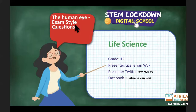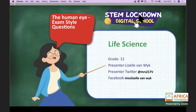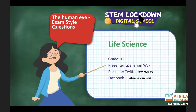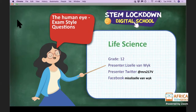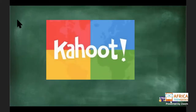Welcome, everyone! We are going to start with a Kahoot today so we don't have to rush it. Get your devices ready — we're doing the Kahoot on the human eye and vision: the work we covered yesterday on pupillary mechanisms, accommodation, and defects including farsightedness, long-sightedness, astigmatism, and cataracts. After the Kahoot we'll work through exam-style questions.